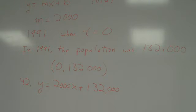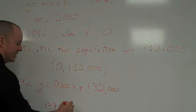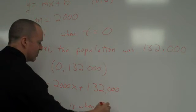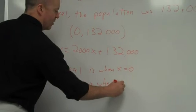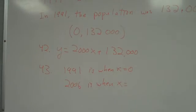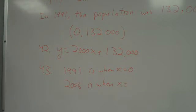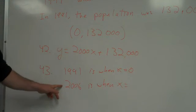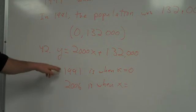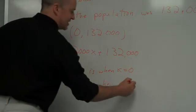43 says, use the model to estimate the population of Kenosha in 2006. For 43, 1991 is when X equals 0. 2006, therefore, is going to be when X equals... 1991 is when X equals 0. 14 something. Well, we're trying. Oh, 150, right? 15 years. Just 15. It's not 150 years. Only 15 years have passed in between here. So, basically, if 1991 is year 0, 2006 is year 15.